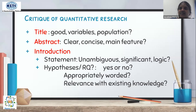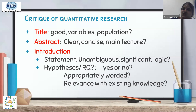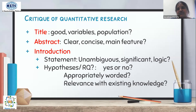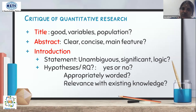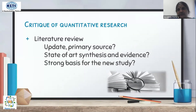Then go to the hypothesis or research question. Check whether a hypothesis is written — if not, check whether justification statements are provided. See whether it is appropriately worded, whether the variables are included, whether the predicted relationship between variables is explained, and whether the hypothesis or research question is relevant to existing knowledge. Answer these questions and then move on to the literature review.